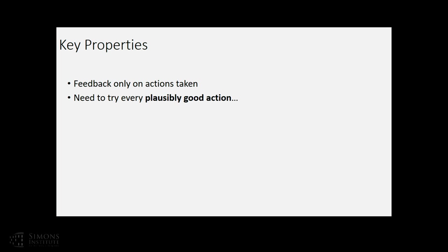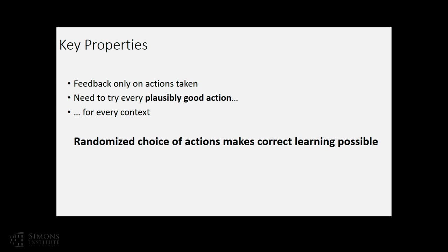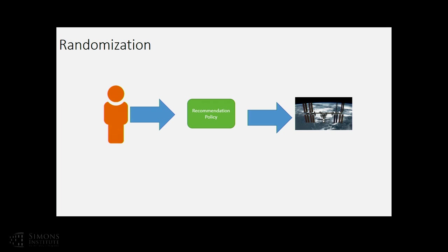The key challenge is that we receive feedback only on the actions we've taken, which means we need to explore - try all actions we haven't ruled out as poor. In a contextual bandit setting, what's a good action depends on the context, suggesting we need to try every plausibly good action for every context, which would be too much exploration if done naively. We know we have to do some randomized choice of actions. For one class of questions, you really have to do randomization; for the other, you might get away with an upper confidence bound type strategy.